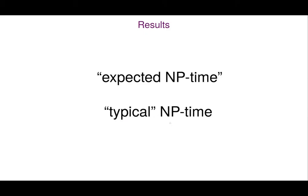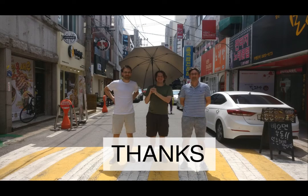Our result can also be interpreted as placing the art gallery problem for typical instances in the complexity class NP. For typical instances it is solvable in NP time, whereas for the worst case it is solvable only in the complexity class ETR. Thank you for your attention.